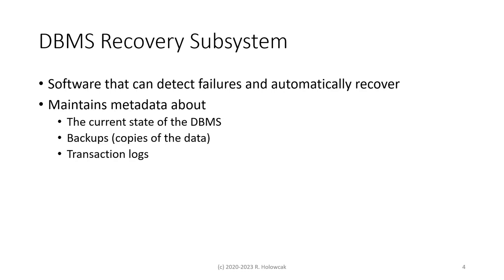In order to do this, the database recovery subsystem maintains metadata about the current state of the database: is it up and running, accepting transactions, backing up data, or shutting down? In addition, the recovery subsystem keeps track of backups — copies of the data, where they are and when they were taken. Third, the DBMS recovery subsystem handles transaction logs. Logs or journals are a record of what has happened in the database. Between these three pieces of metadata, the recovery subsystem can detect a failure and automatically recover.